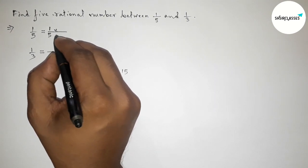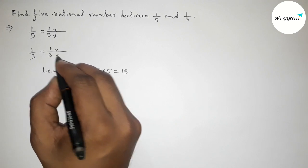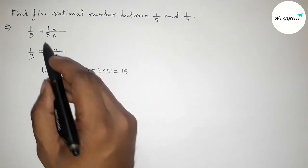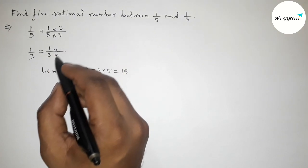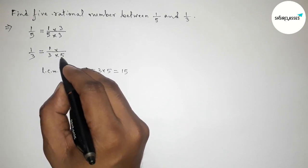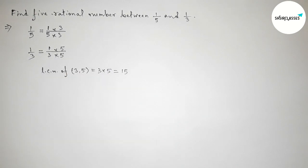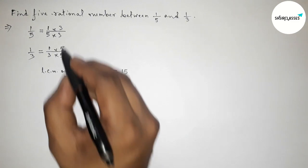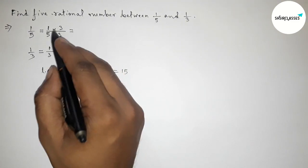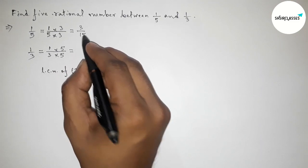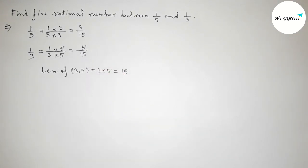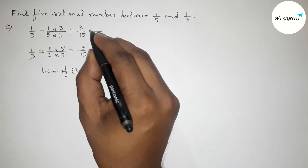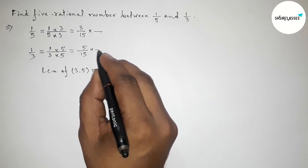Now write down 1/5 and 1/3. For 1/5, multiply top and bottom by 3: five threes are 15, giving 3/15. For 1/3, multiply top and bottom by 5: three fives are 15, giving 5/15. Now both denominators are equal.